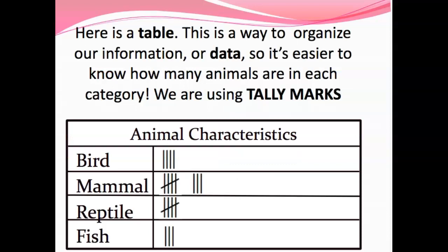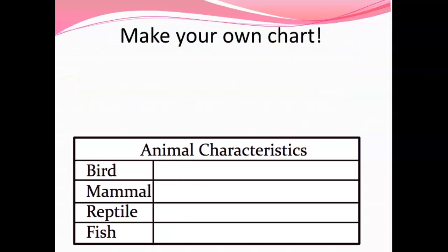You should now have a tree map with all of your animals sorted. We're going to turn our tree map into a table. A table is a way to organize our information or data — this is one of those vocabulary words. Data is just like information. When we use tally marks in a tally chart it's easier to see how many animals are in each category. Pause right here and make your own chart: write 'animal characteristics' at the top, then bird, mammal, reptile, and fish, and put a tally for each animal you sorted into your tree map.